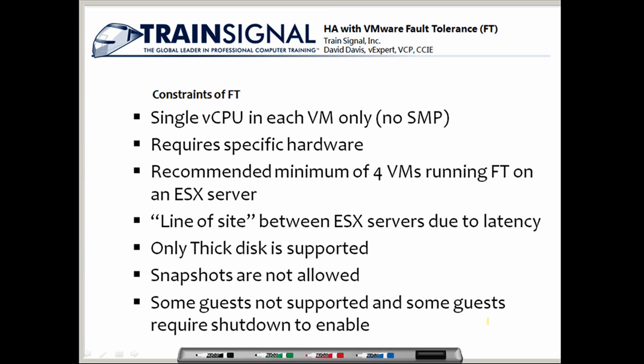Now let's talk about some constraints of fault tolerance. It's a truly amazing product, but being so new, it still has constraints to be aware of. The first is that only a single virtual CPU per virtual machine is supported — no symmetric multiprocessing is allowed on fault tolerance protected VMs. There is also a soft limitation: a recommended maximum of four virtual machines protected by fault tolerance on a single ESX server.